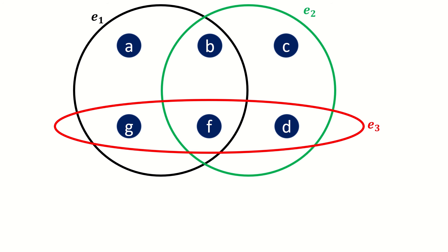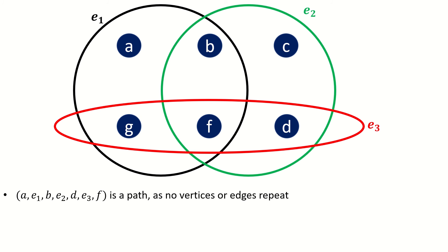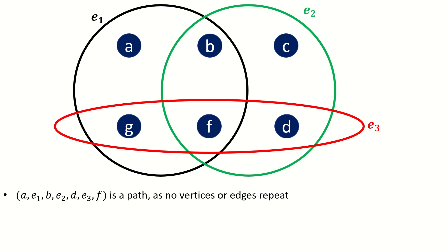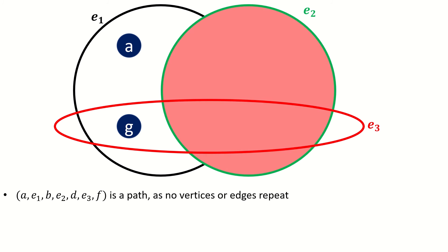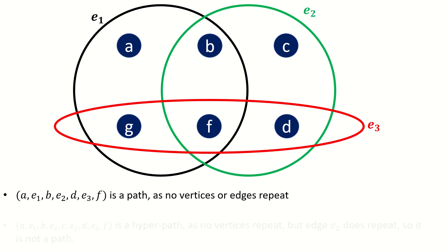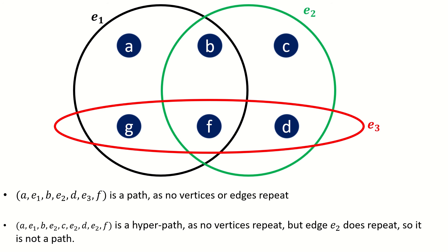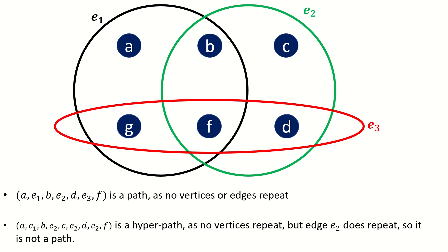Let's look at a couple of examples. In this hypergraph, a e_1 b e_2 d e_3 f is a path. While a e_1 b e_2 c e_2 d e_2 f is a hyperpath.